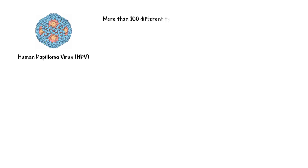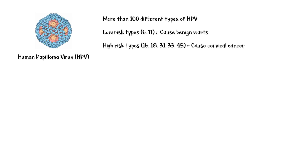Cervical cancer is caused by human papillomavirus infection. More than 100 different types of this virus have been identified. These are classified as low-risk and high-risk types depending on their ability to cause cancer. Low-risk types HPV6 and HPV11 cause benign warts, whereas high-risk types HPV16, 18, 31, 33, and 45 cause cervical cancer.